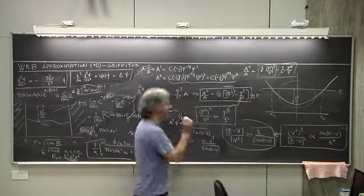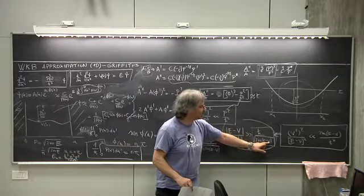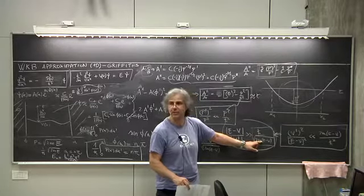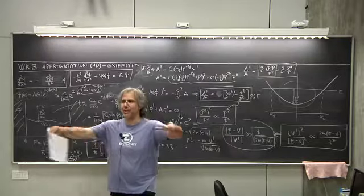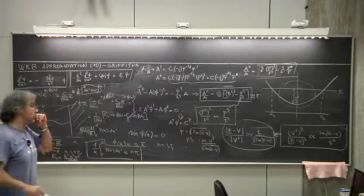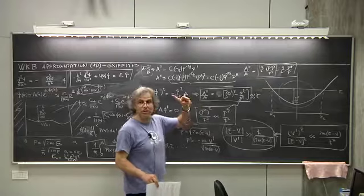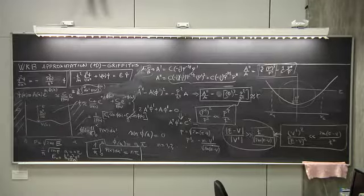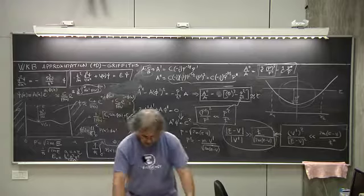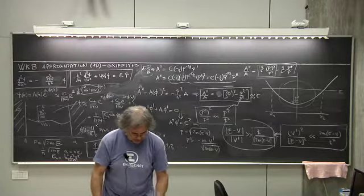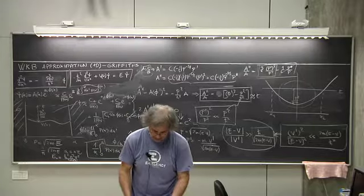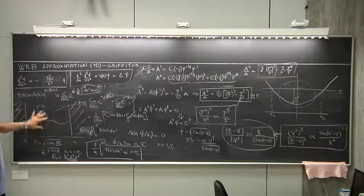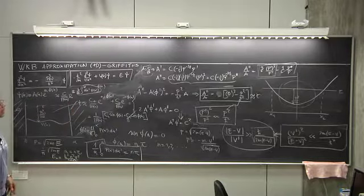This condition is never satisfied at the classical turning point, where E equals V, because there the de Broglie wavelength diverges. So the WKB approximation is always invalid near the turning points — those are the dangerous regions.